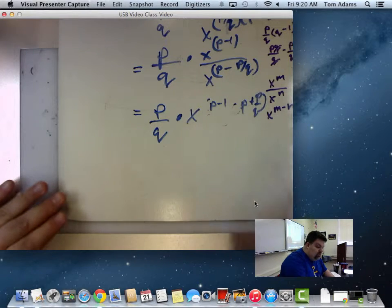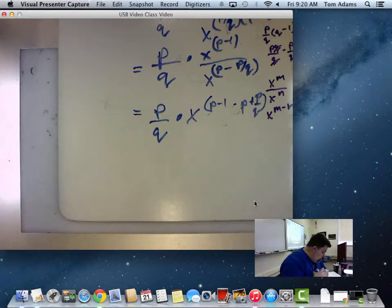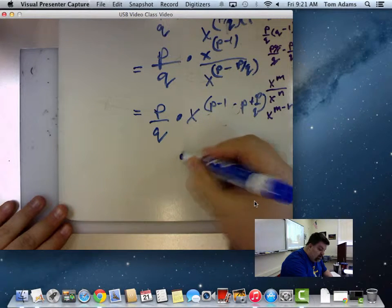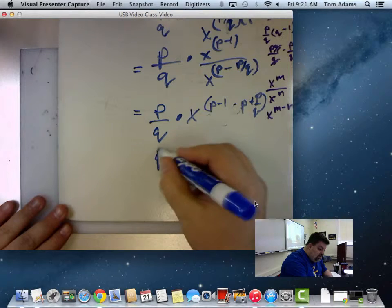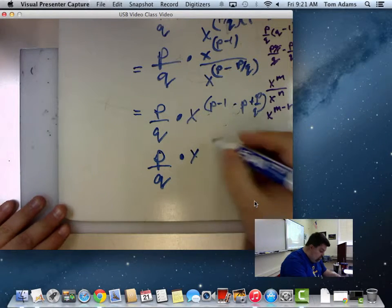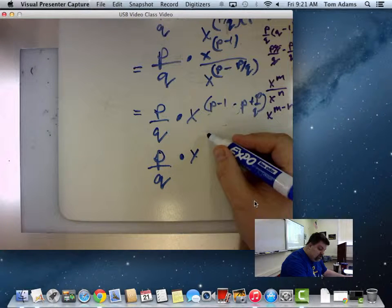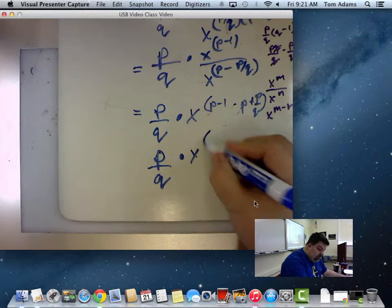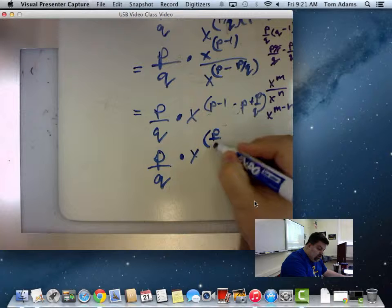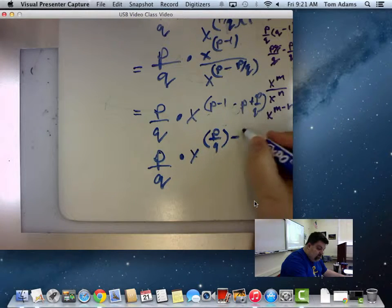All right. And so now we're just kind of adding them up. Well, what happens there? If I factor out, I end up, really, what I end up with is P over Q is multiplied by X raised to the P over Q minus 1.